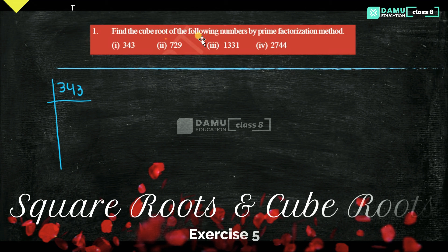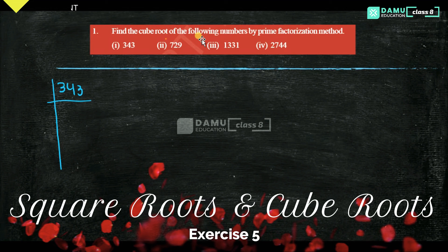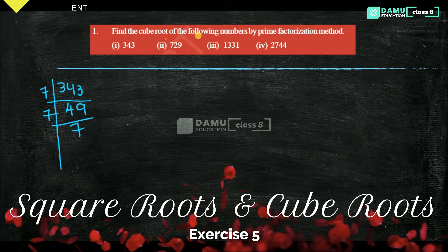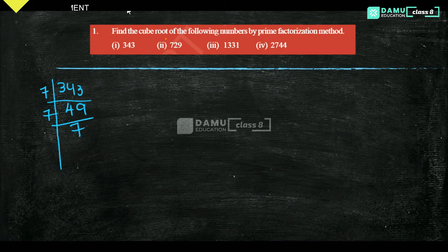Then try 3 — also not possible, because if you add all the digits you get 10. Then 5 — no. Then go with 7. So 7 ones are 7, 7 fours are 28, then 6 will come, 7 nines are 63, then 7 sevens are 49.